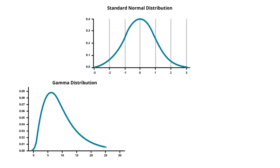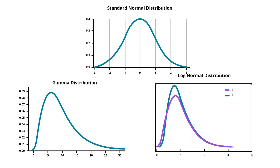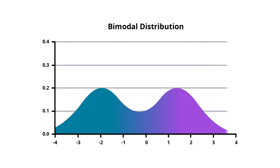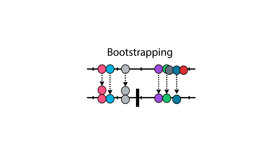Using traditional techniques, you would have to assume that the distribution is normal, gamma, or log-normal, and then use this distribution to draw conclusions. But what if the true distribution is bimodal? Likely you would need to use a combination of two distributions with some probability associated with being from one or the other.